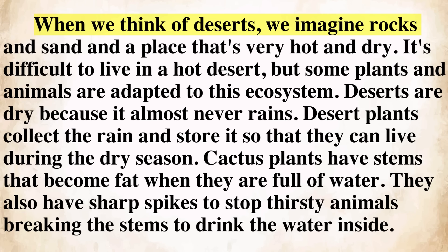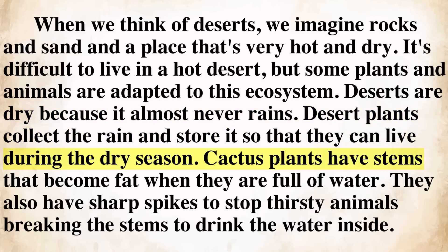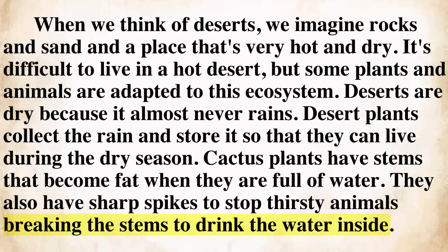When we think of deserts, we imagine rocks and sand and a place that's very hot and dry. It's difficult to live in a hot desert, but some plants and animals are adapted to this ecosystem. Deserts are dry because it almost never rains. Desert plants collect the rain and store it so that they can live during the dry season. Cactus plants have stems that become fat when they are full of water. They also have sharp spikes to stop thirsty animals breaking the stems to drink the water inside.